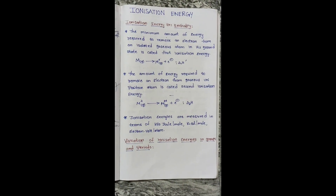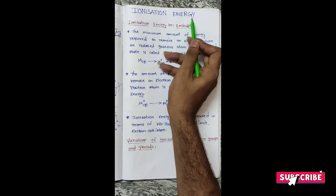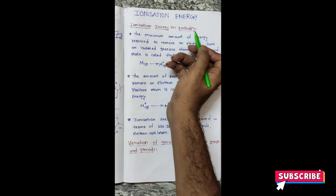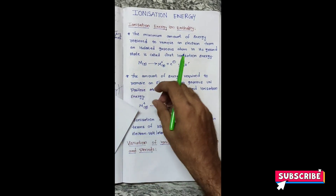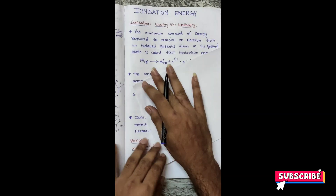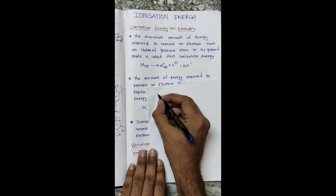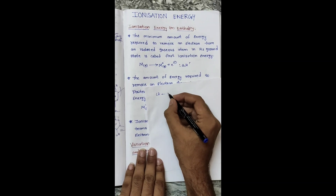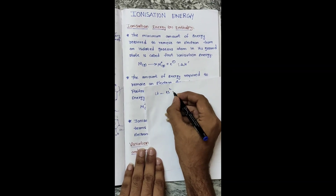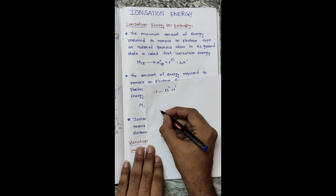Hi friends, my name is Lokesh. Today we will see about ionization energy. First, assuming a lithium atom — its electron configuration is 1s2 2s1. We will draw the orbital diagram of lithium.